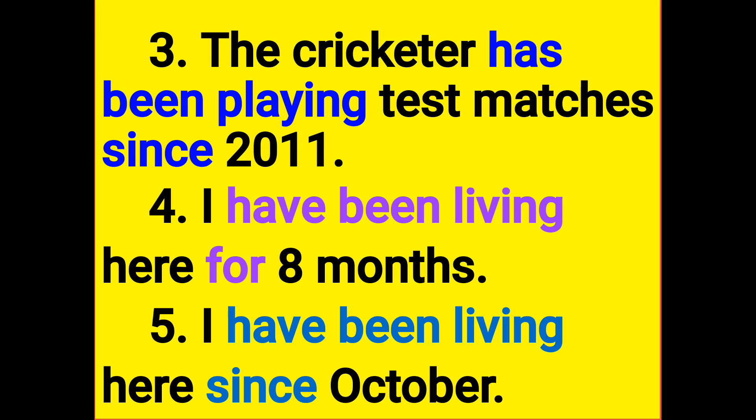So across the three tenses, for and since are used to make sentences in present perfect continuous tense. In present perfect continuous tense, Have or Has Been must be present. Since means 'from a point in time' and for means 'a duration of time.' These are the rules, sentences, and examples. Thank you for watching this video.